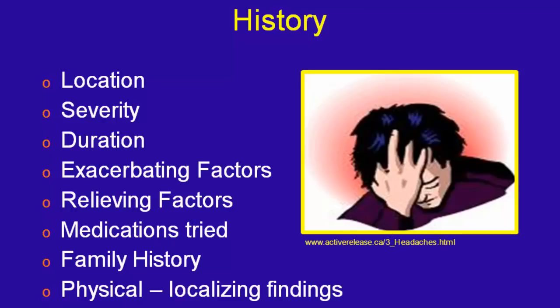Ask what makes it worse, what makes it better, and what medications they've already tried. Go through every single over-the-counter and prescription medicine. Patients do not like to tell you about their OTC medications — I can't count how many come in taking eight ibuprofen a day, six Excedrin a day, five Tylenol a day, and then tell your staff they don't take anything. You have to find out what they're taking over-the-counter because that's often the reason they have a headache. Family history is important — most migraine patients have family members with migraine. The physical exam is important for secondary headaches.